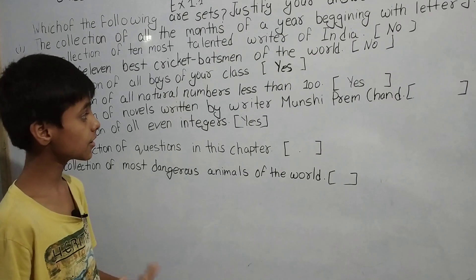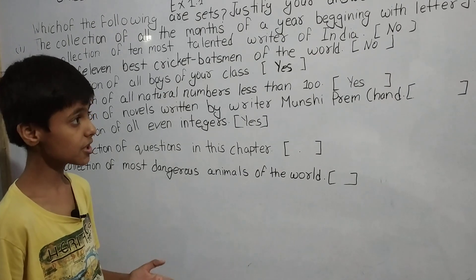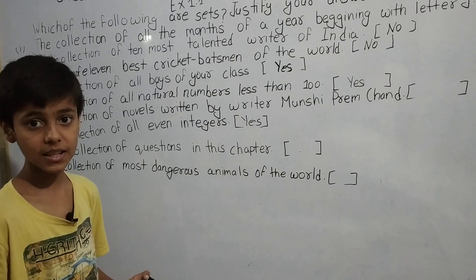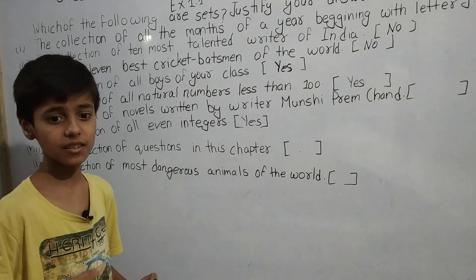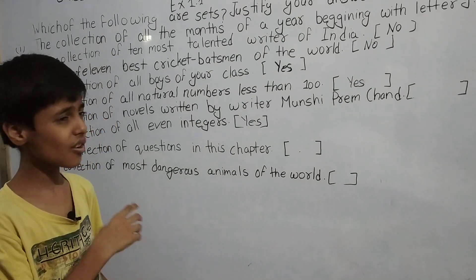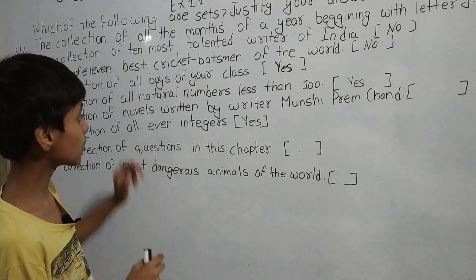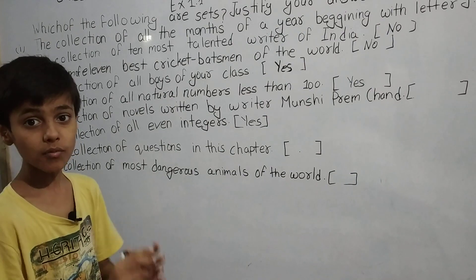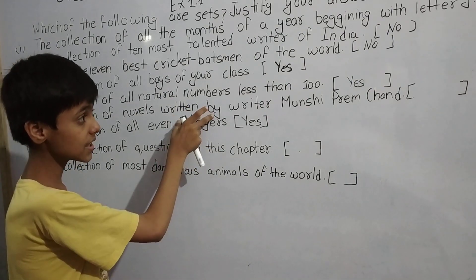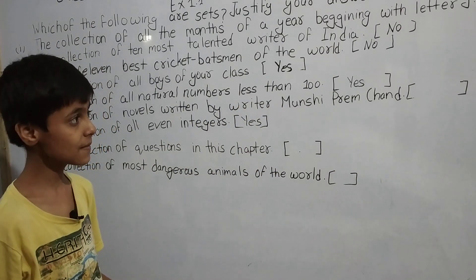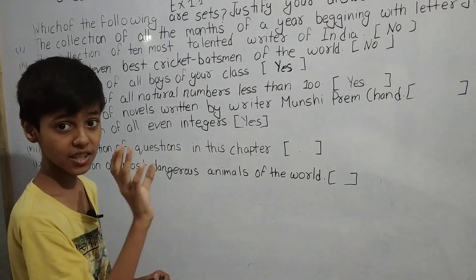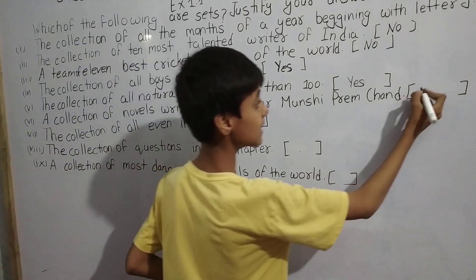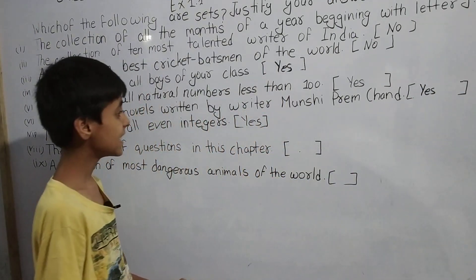Part (vi): A collection of all novels written by the writer Munshi Premchand — for example, Godan, Gaban, and his other novels. If you ask me or any other person about all novels written by this writer, we will give the same answer. The elements are well defined and the same for everyone, so this collection is yes — a set.